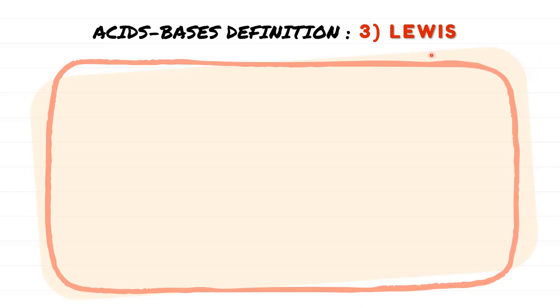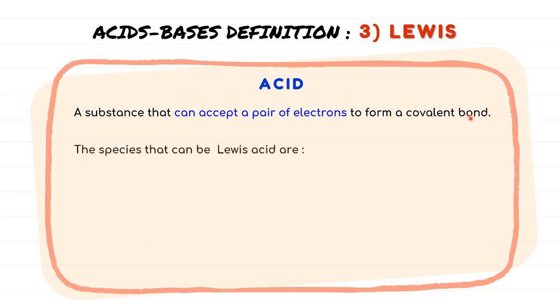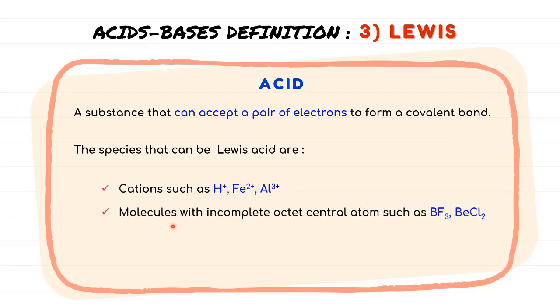Lastly, Lewis proposed definitions of acids and bases according to electrons. So acids are substances that can accept a pair of electrons to form a covalent bond. In other words, species with less electrons in its Lewis structure. So the example of acids according to Lewis can be grouped into four. The first one, they can be cations such as H+, Fe2+, Al3+. They can also be the molecules with incomplete octet central atoms such as BF3 or BCl2.